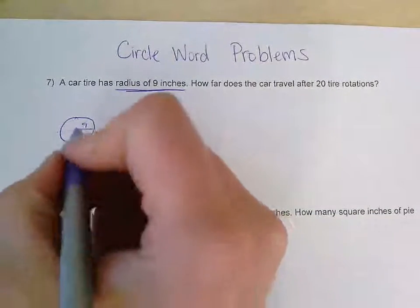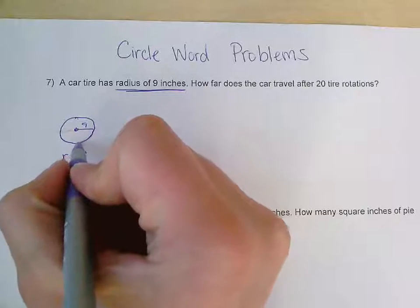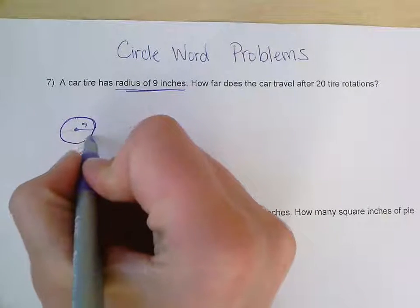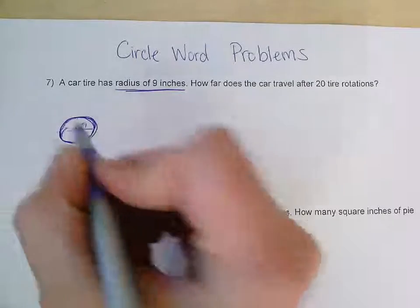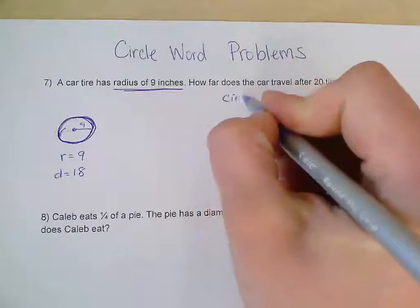As I think about this tire rotating, the part that's of the tire that's actually touching the ground as it rotates is the rubber. And so that's only on the outside. So that's circumference. So I'm going to need to solve for circumference.